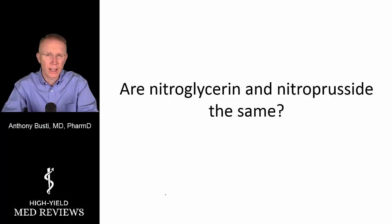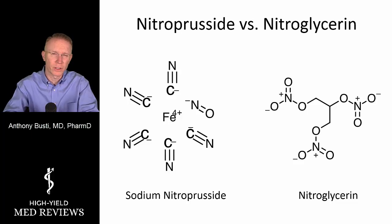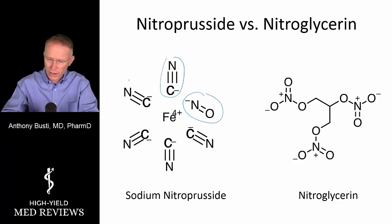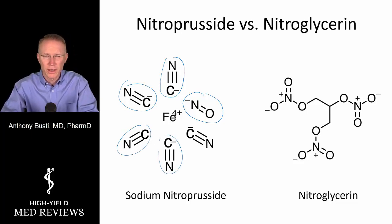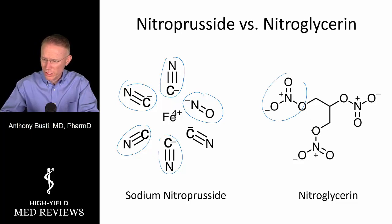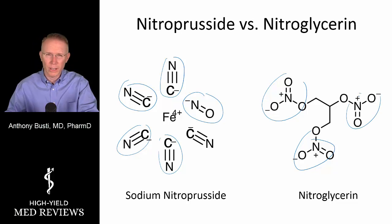So are nitroglycerin and nitroprusside actually the same? No — if you look at their structures, they're very different. Sodium nitroprusside gives you the nitric oxide you need, but also delivers a fairly large dose of cyanide molecules, which is one of the toxicities or risks of giving it, especially on a continuous infusion. Nitroglycerin, by contrast, provides the nitric oxide groups without that cyanide burden.